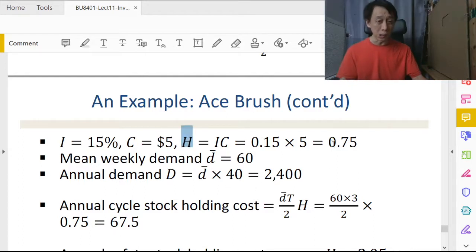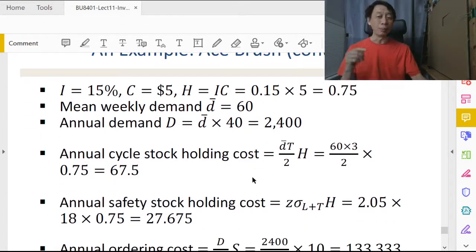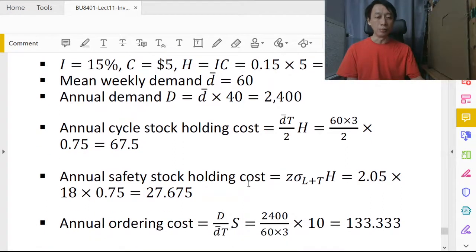Then we plug in to the formulas to obtain the three components of the holding costs. And of course the largest seems to be ordering cost.